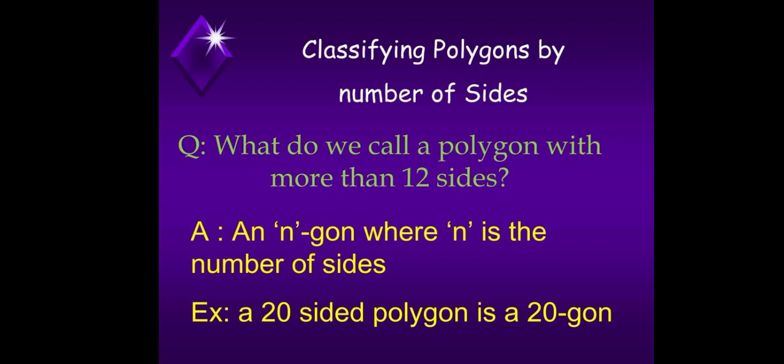Classifying polygons by number of sides. What do we call a polygon with more than twelve sides? So it is an N-gon where N is the number of sides. N represents of how many sides a polygon has. For example, twenty-sided polygon. We could call it twenty-N-gon.